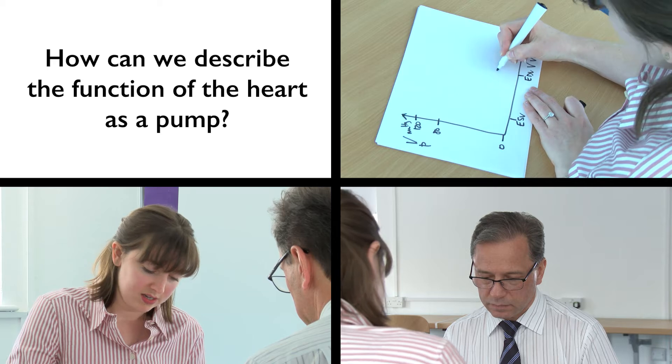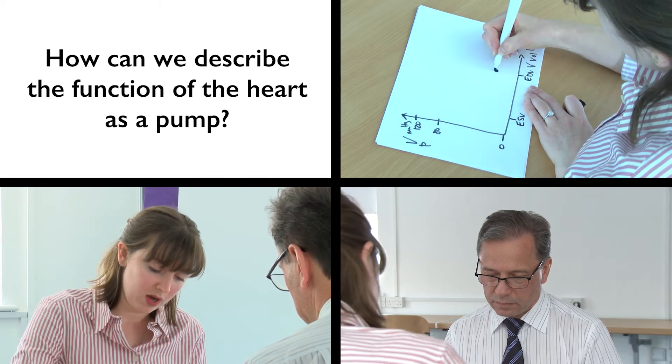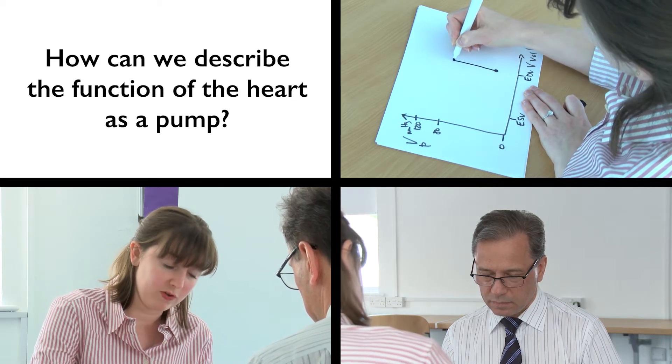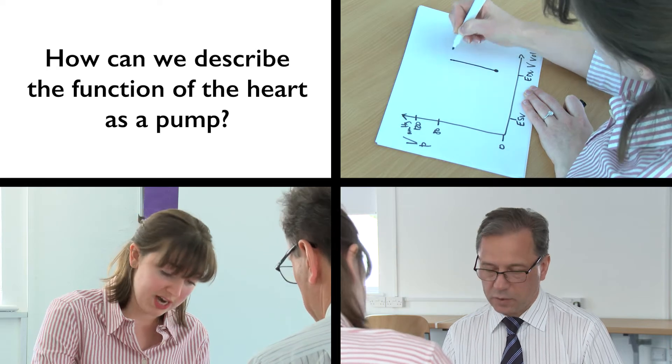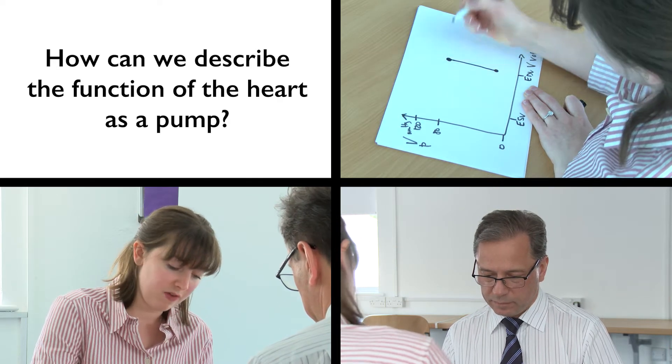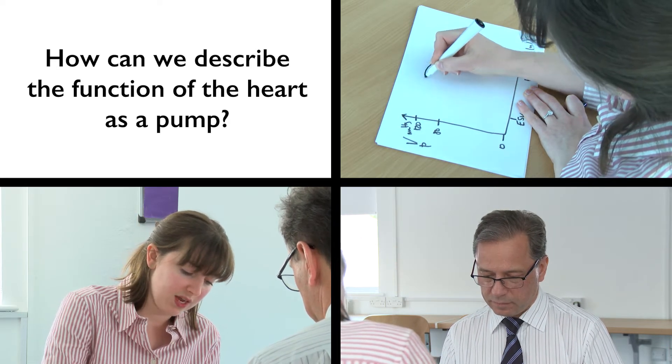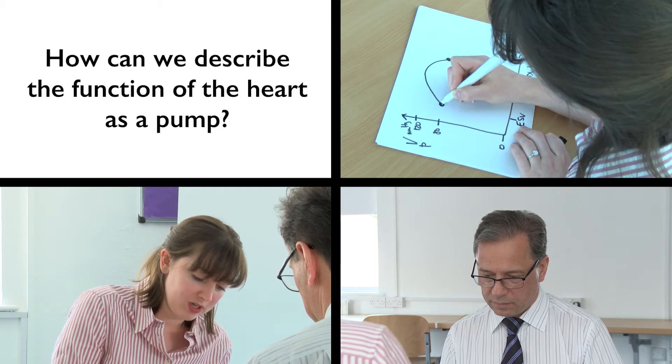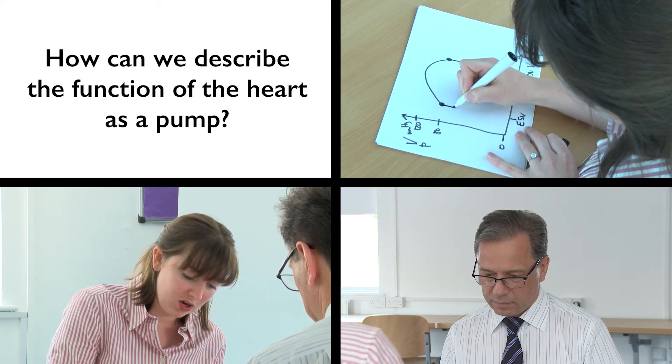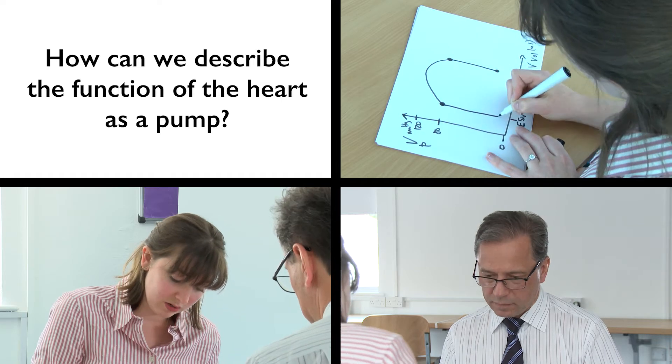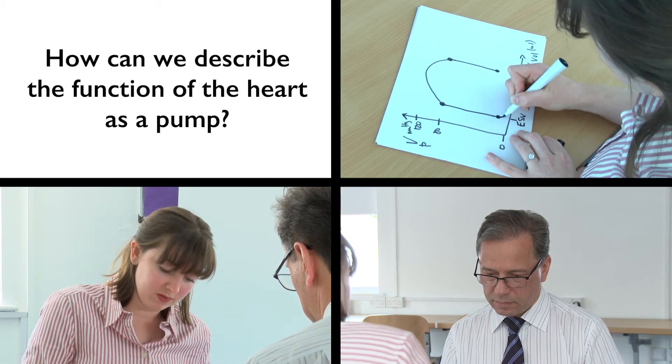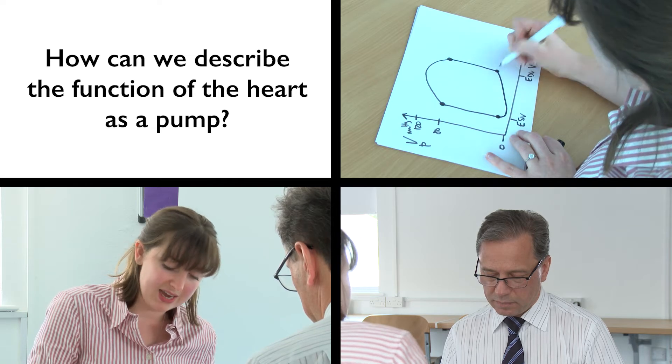Starting at the end diastolic volume, the graph vertically ascends through isovolumetric contraction until the aortic valve opens, and then you get the ejection of the stroke volume, and then the aortic valve closes, and then you get isovolumetric relaxation until the mitral valve opens and you get diastole.